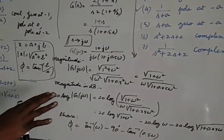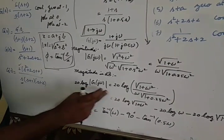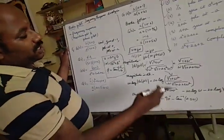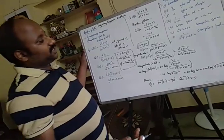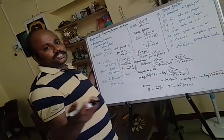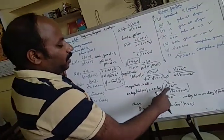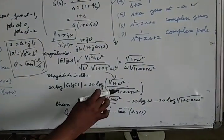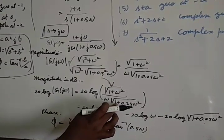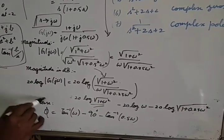In the Bode plot, we represent the magnitude in decibels. To convert, we compute 20·log(magnitude). The key advantage of logarithms is that multiplication becomes addition and division becomes subtraction. So the magnitude in dB becomes: 20·log√(1 + ω²) minus 20·log(ω) minus 20·log√(1 + 0.25ω²). This is the magnitude of the given transfer function.